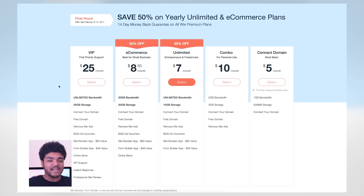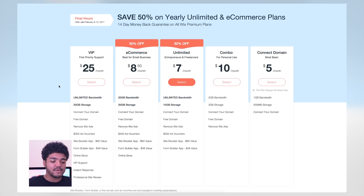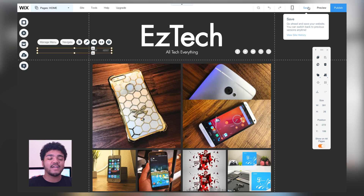The e-commerce plan is best for small businesses — you get 20 gigs of bandwidth and 20 gigs of storage. The bandwidth refers to how many people will be trafficking in and out of your website. For entrepreneurs and freelancers, similar to what I'm doing, you get unlimited bandwidth — if you think a lot of people are going to visit, that's what you want. Then there's one for personal use if traffic won't be that high, and you've got VIP with first priority support. I'll probably go with the unlimited entrepreneurs and freelancers one.